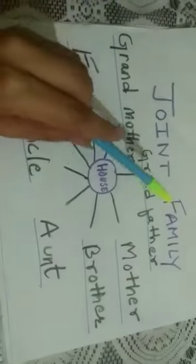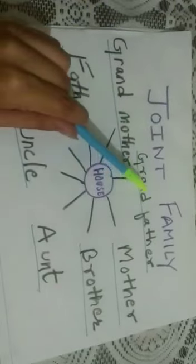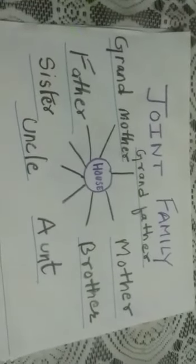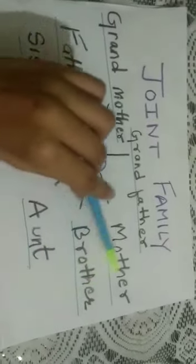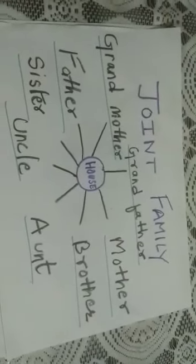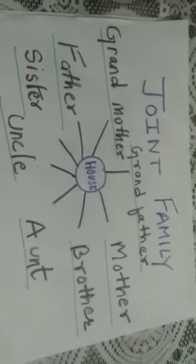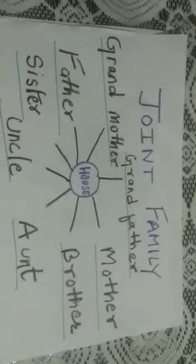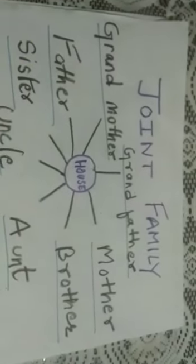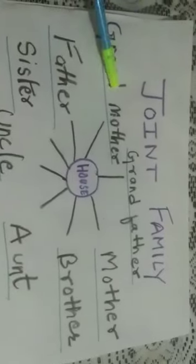Don't worry — to help you understand the difference between a joint family and a nuclear family, I have something for you. As you can see here, there is a joint family. Who are there in a joint family? Grandfather, grandmother, father, mother, brother, sister, and even in some families, uncle and aunt. All together there are many family members. We find this kind of family mostly in our society, where many people live together in a house.